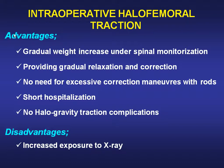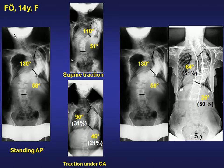There is no need for excessive correction maneuvers with rods, and no need for rib manipulation or thoracoplasties. A 14-year-old with severe thoracic curve: traction x-ray under general anesthesia showed 31% flexibility, and we performed posterior surgery with halo-femoral traction. We obtained 51% correction.